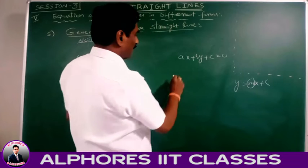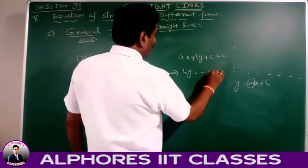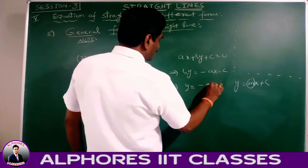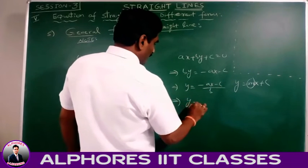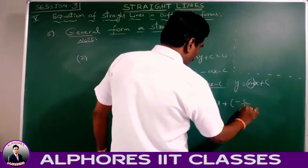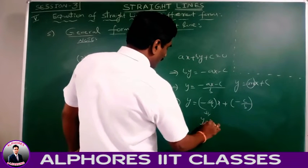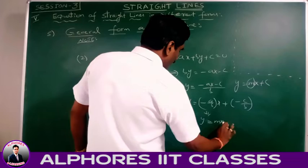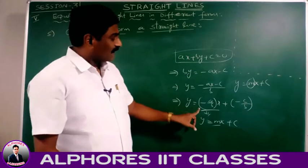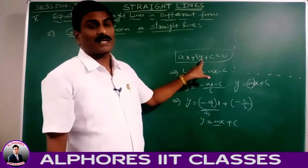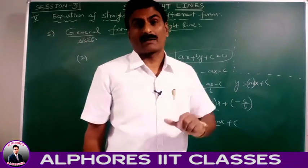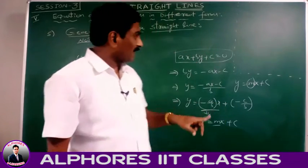From ax + by + c = 0, we get by = -ax - c. Dividing by b: y = (-a/b)x + (-c/b). This is in the form y = mx + c. Therefore, the value of m is -a/b. The slope of the line ax + by + c = 0 is -a/b, that is, minus the x-coefficient divided by the y-coefficient.